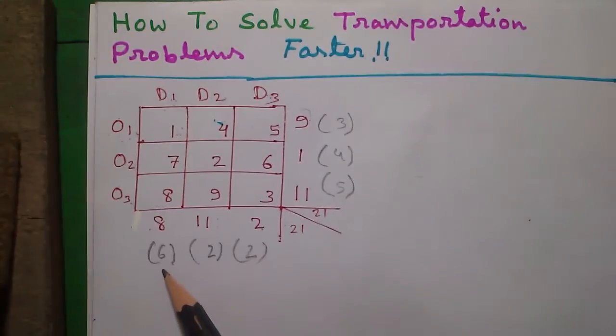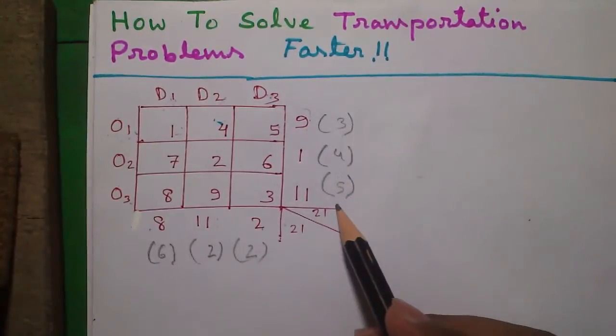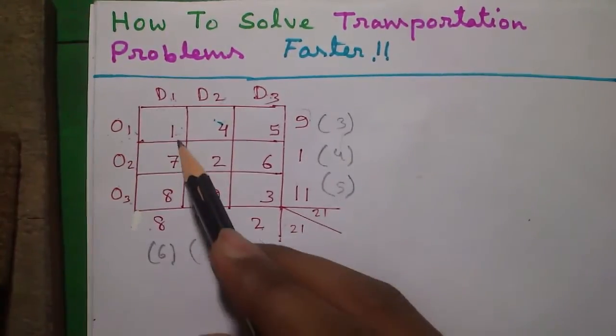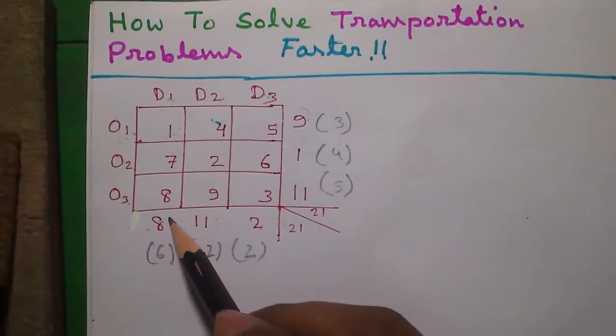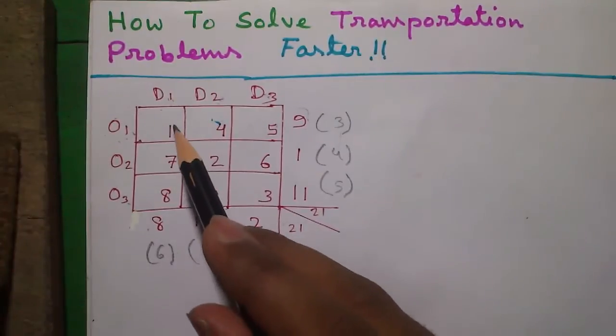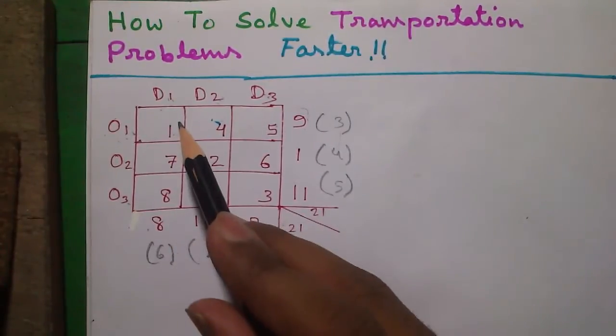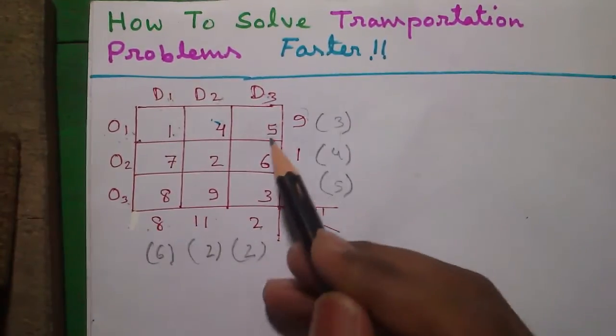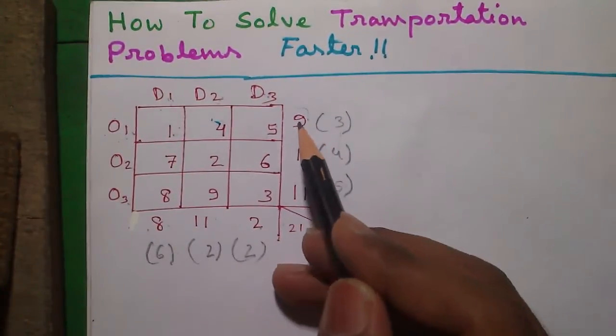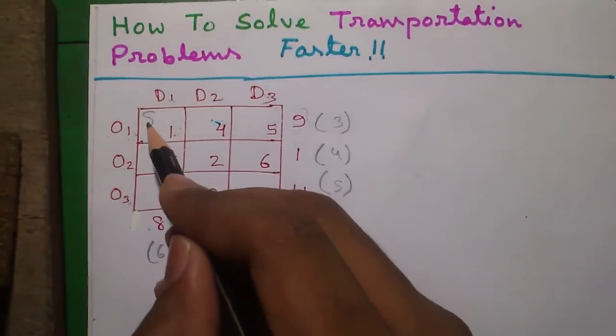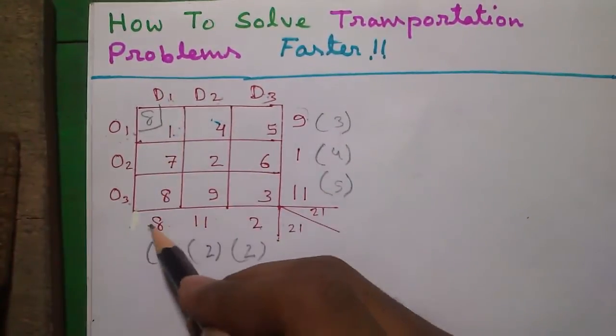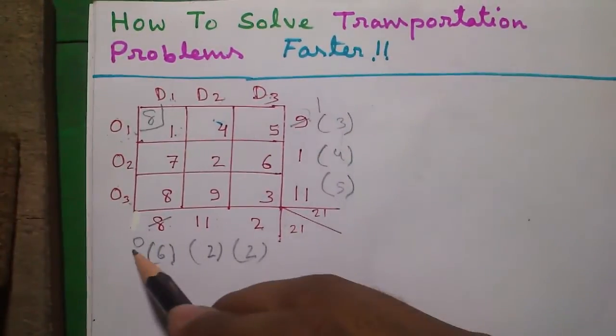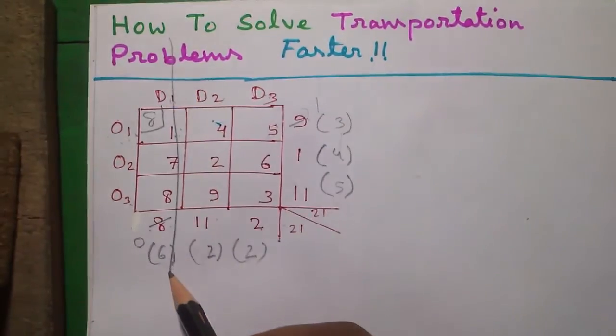Next we'll look for the largest value among these outside bracket values. So the largest value is 6. So we'll do our first allocation in this column, that is column 1. In column 1 the smallest number is 1. So we'll allocate in column 1 and in this cell. For this cell the demand is 8, supply is 9. So we'll take the minimum value which is 8 and allocate. So 8 is allocated, it becomes 0 and it becomes 1. And now since it becomes 0, we'll strike through this column.